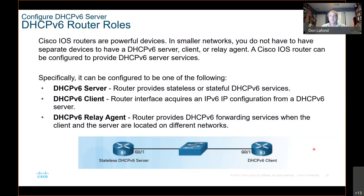Cisco IOS routers are powerful devices. In smaller networks, you do not have to have separate devices to have a DHCPv6 client or relay agent. A Cisco IOS router can be configured to provide DHCPv6 server services. It can be either stateless DHCPv6 or SLAAC or stateful DHCPv6. The router can also be configured to be a client — just like we did in IPv4, we can set the router to get its address from another router.